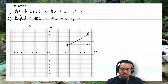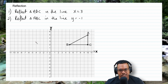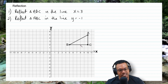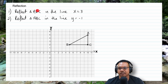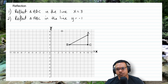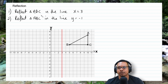Moving on to the next transformation: reflection. The thing about reflection is that we have a mirror line. The distance between the object and the mirror line must equal the distance between the image and the mirror line. Also, a line connecting the object and the image must be at right angles to the mirror line. For question 1, we reflect triangle ABC in the line x equals 3. We locate x equals 3 on the x-axis and draw a vertical line through it — that's our mirror line.